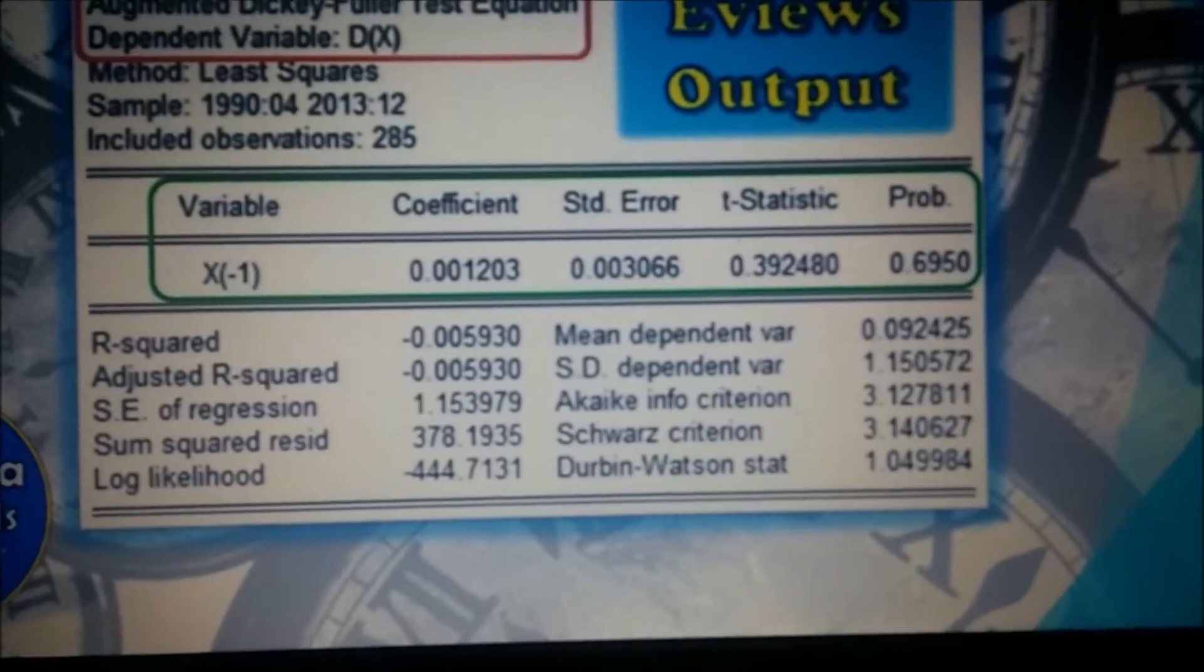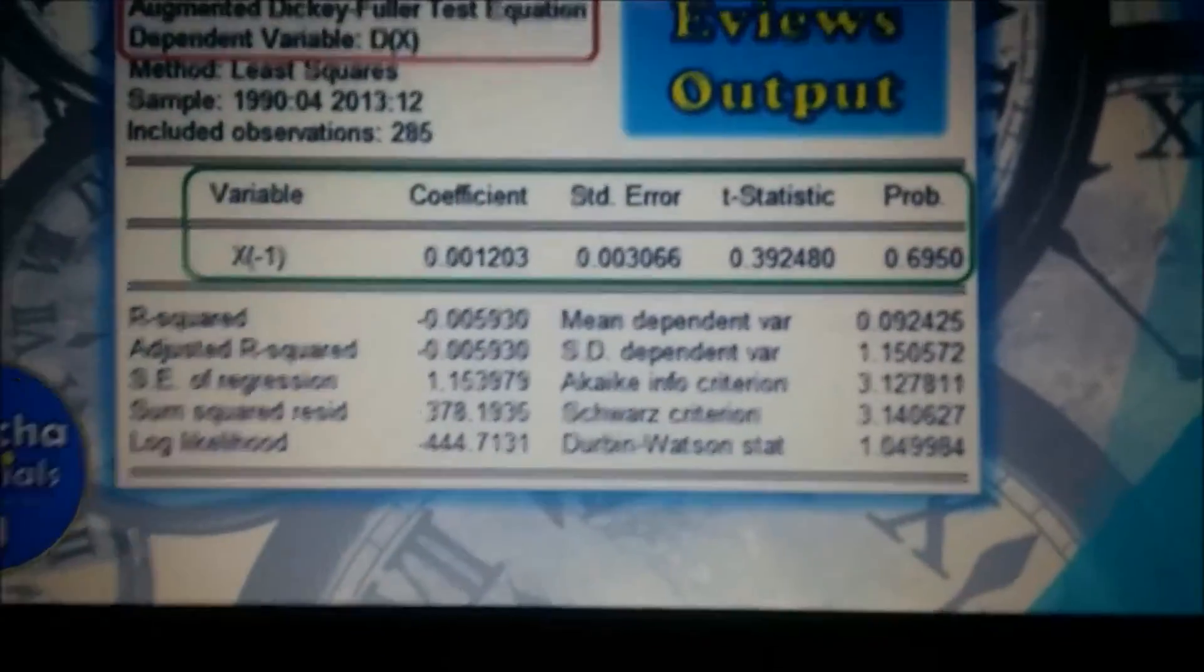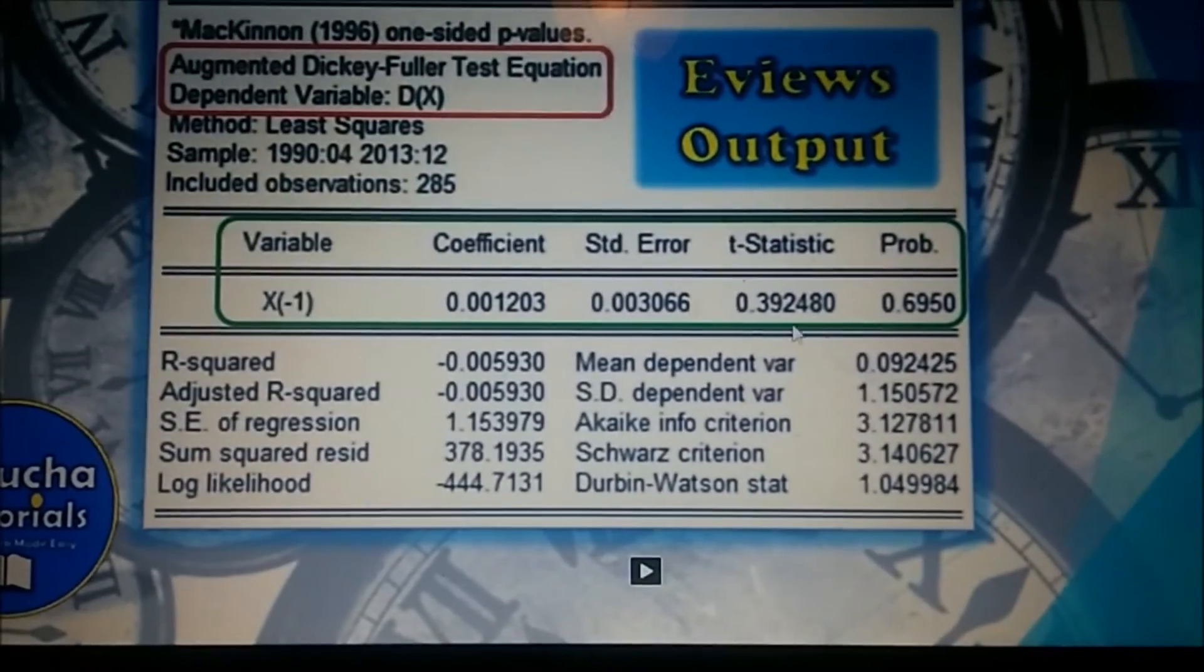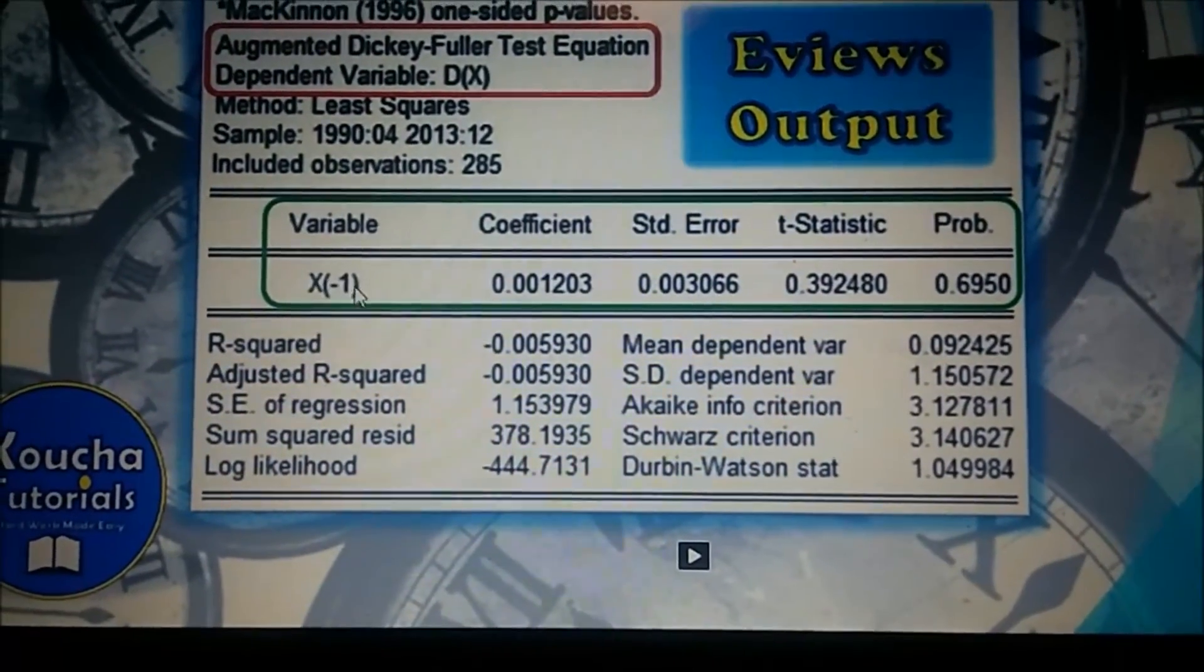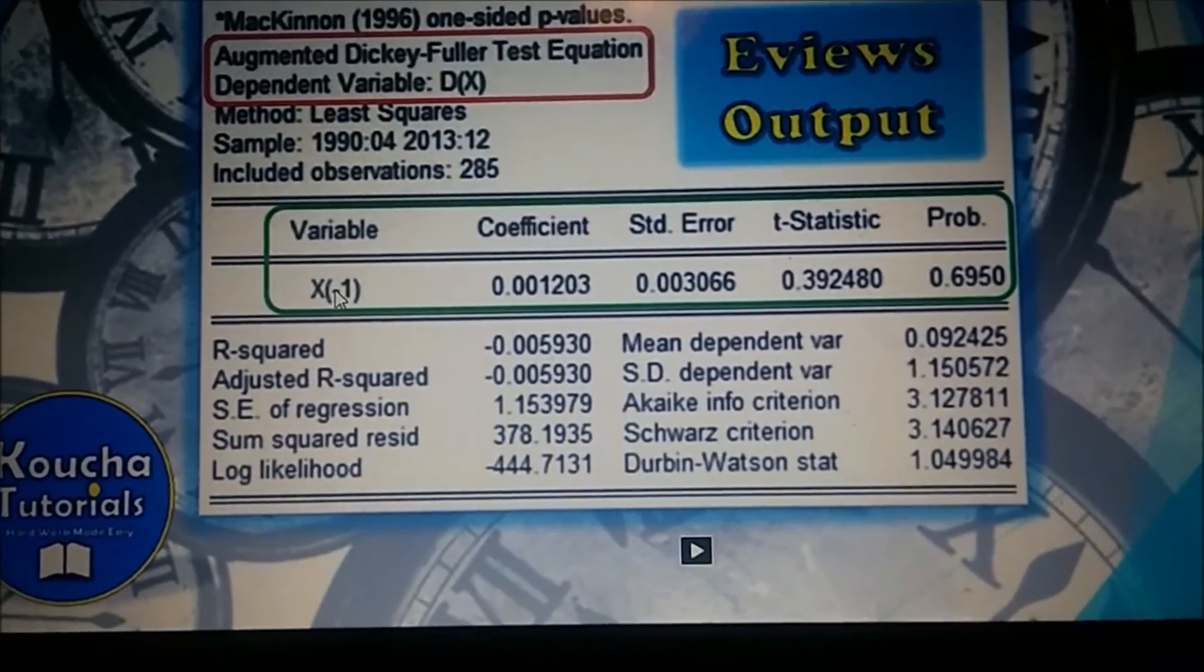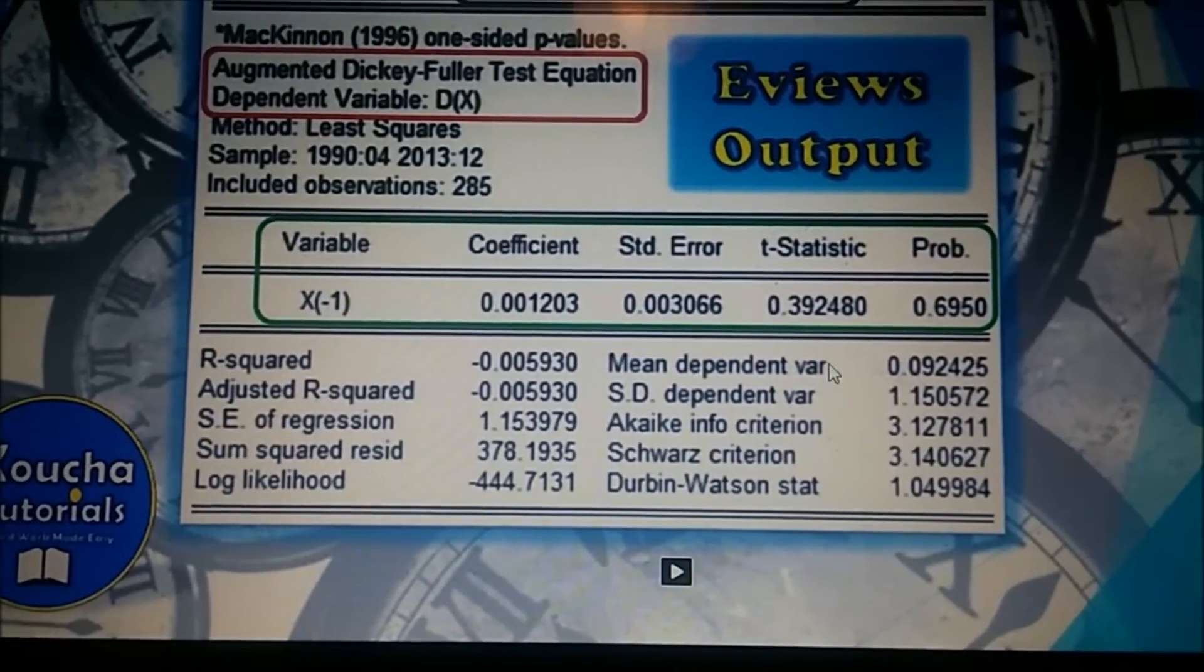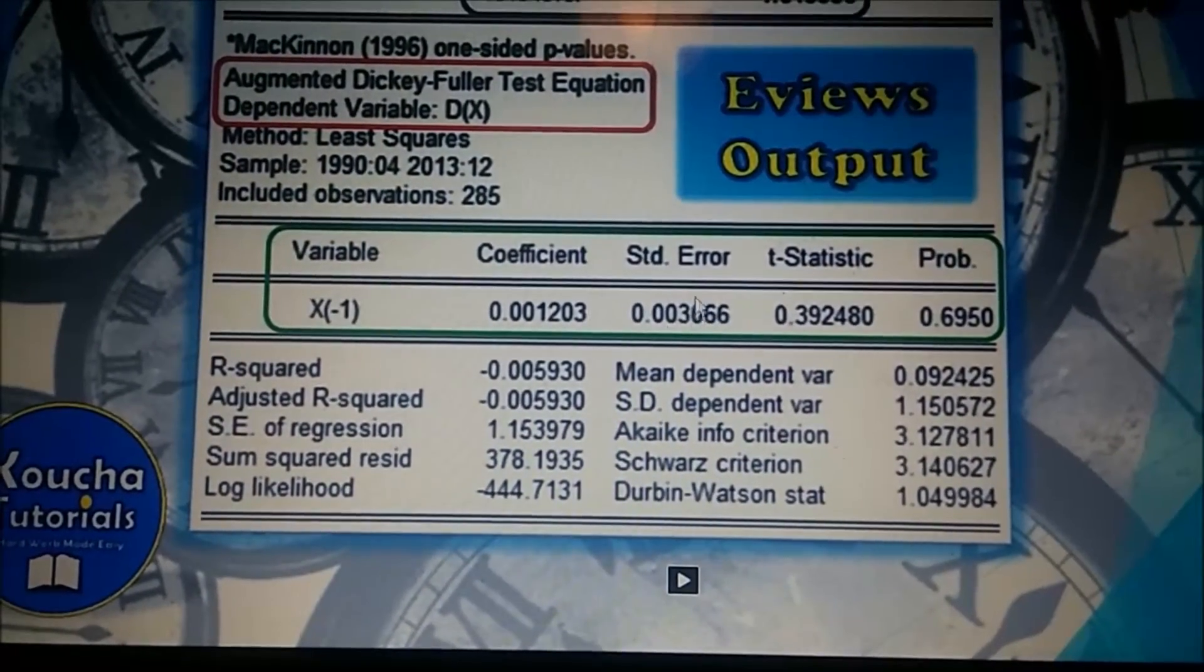We will be comparing these critical values against the green information over here which has the variable, the coefficient, the standard error, t-statistic, and probability. Notice over here the X minus 1. This would be the coefficient value here, this parameter. This standard error would be the standard error of this coefficient here.